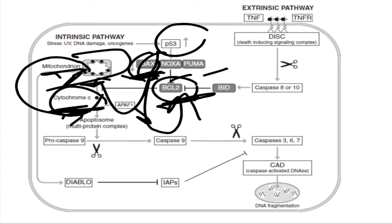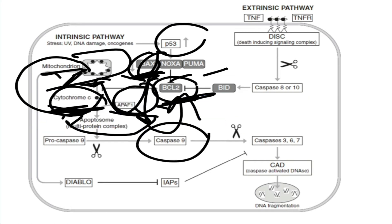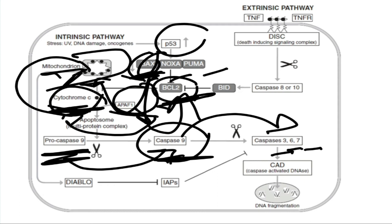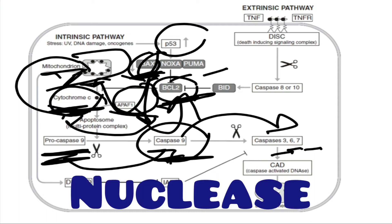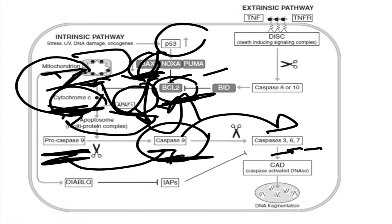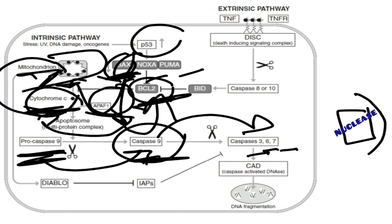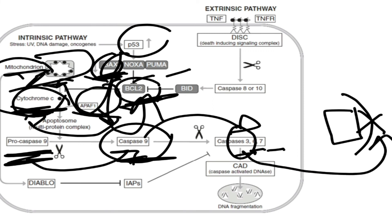Once cytochrome C is present in the cytoplasm, it interacts with another protein called APAF1. Both cytochrome C and APAF1 form a complex called the apoptosome. The function of this complex is the activation of caspases — the first caspase activated is caspase 9, by converting pro-caspase 9 into caspase 9. Once caspase 9 is activated, it activates caspase 3, 6, or 7. Caspase 3 is responsible for activating nuclease, an enzyme that degrades nucleic acids such as DNA. Caspase 3 inhibits the inhibitory protein that blocks nuclease, setting nuclease free to move into the nucleus and degrade the DNA, causing the cell to die.